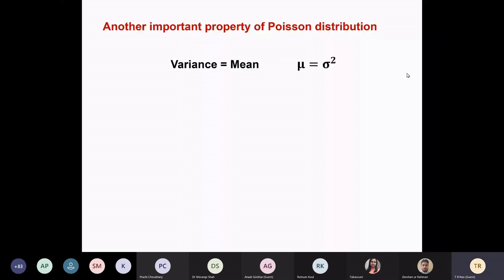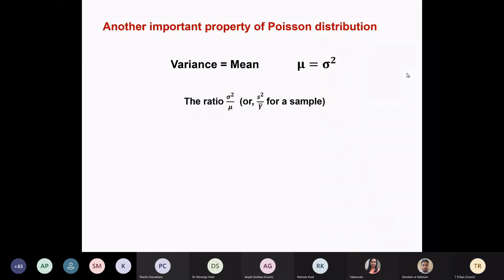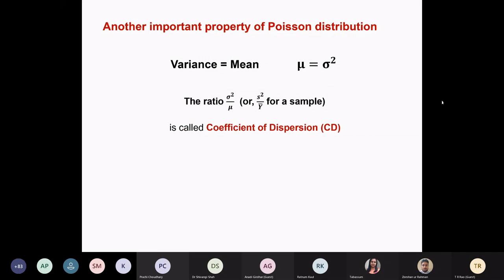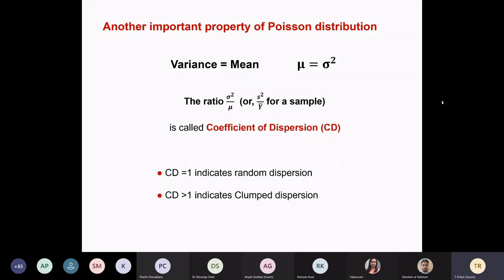Another important property: the variance and mean are equal in Poisson distribution. The ratio of variance divided by mu — that is, sample standard deviation squared divided by mean — is called the coefficient of dispersion. If the coefficient of dispersion is 1, it indicates totally random dispersion. If it is more than 1, it indicates clumped dispersion — meaning they are grouping together and not randomly distributed. If it is less than 1, it is uniform or repulsive distribution.